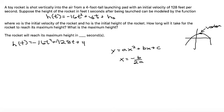In this case it's h and t, but it works similarly. So t will be equal to negative, our b value is the coefficient of t, which is 128, divided by 2 times the a value, which is -16.